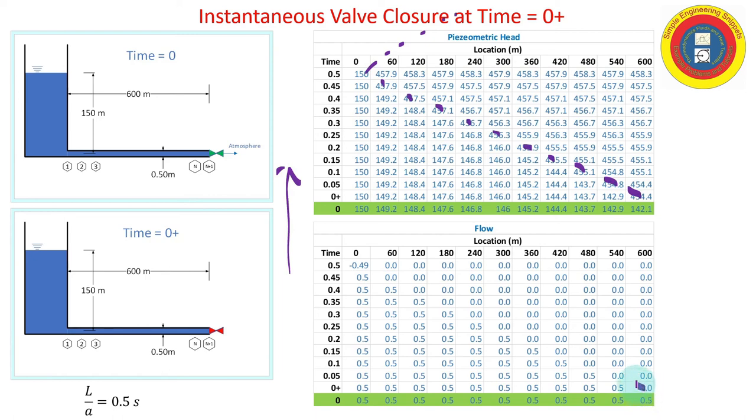Again, along the diagonal as we march up along the characteristics, and now when the wave hits the constant pressure reservoir, it's going to reflect negatively, and that's going to suck flow back into the reservoir, so we get minus 0.49.